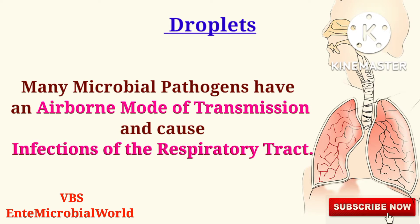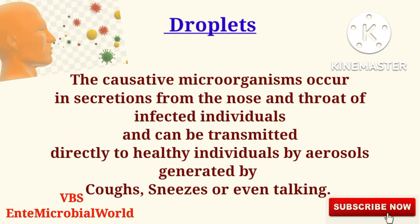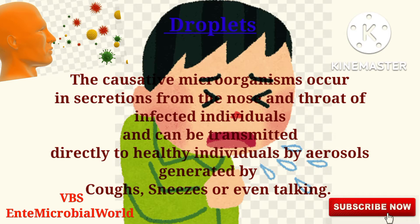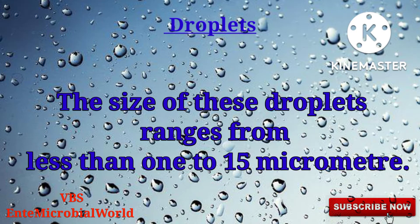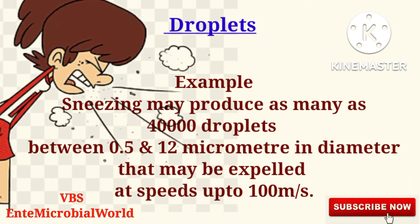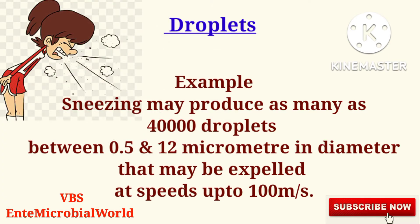Many microbial pathogens have an airborne mode of transmission and cause infections of the respiratory tract. The causative microorganisms occur in secretions from the nose and throat of infected individuals and can be transmitted directly to healthy individuals by aerosols generated by coughs, sneezes, or even talking. The size of these droplets ranges from less than 1 to 15 micrometers. For example, sneezing may produce as many as 40,000 droplets between 0.5 and 12 micrometers in diameter, expelled at speeds up to 100 meters per second.